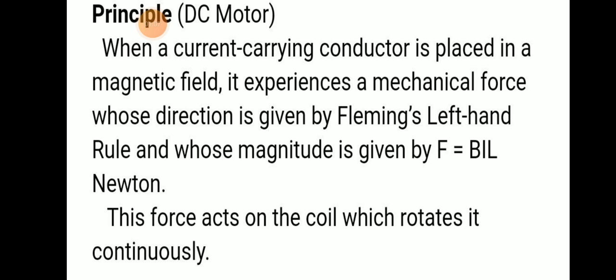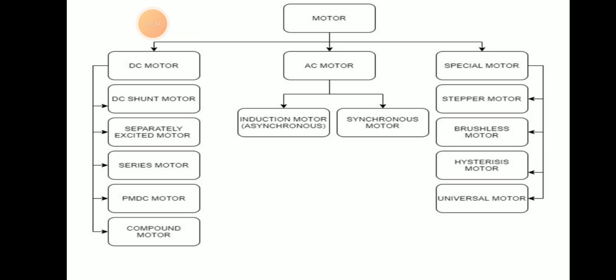When a current carrying conductor is placed in a magnetic field, it will experience a mechanical force. This direction can be found out from Fleming's left-hand rule, which is mainly applicable for the motor. The magnitude is given by the equation F equals BIL Newton, and this force acts on the coil which rotates it continuously.